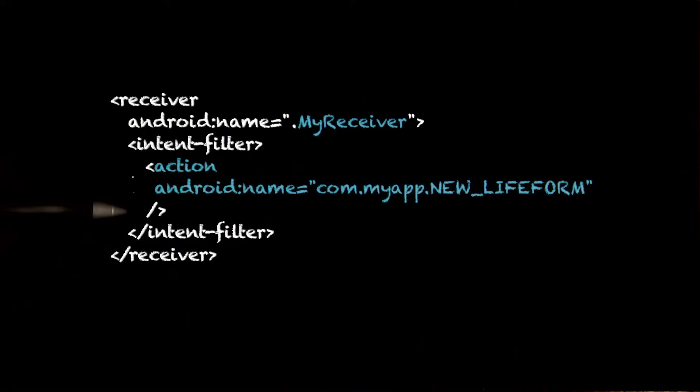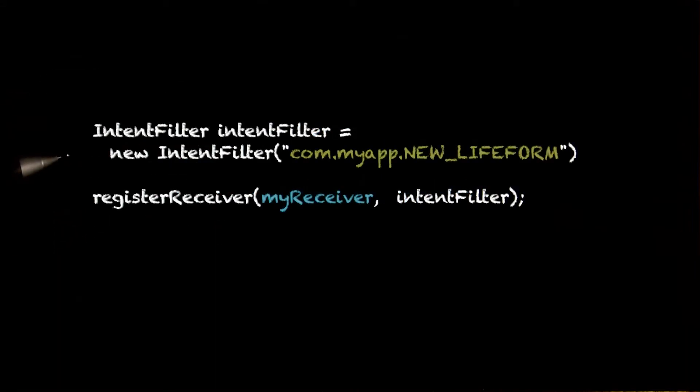Then you define the intent filter that specifies the broadcast event you want to receive. You can do that either here in the manifest, or if you're registering your receiver with an application component such as an activity, you can create your new intent filter like this.